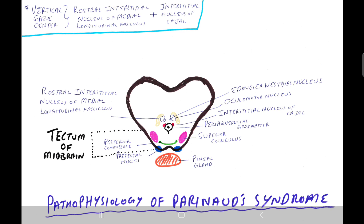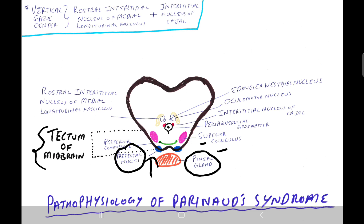The pathophysiology of Parinaud syndrome: a tumor of the pineal gland enlarges and compresses the tectum of the midbrain, thereby damaging the pretectal nuclei, superior colliculus, and the interstitial nucleus of the medial longitudinal fasciculus (MLF).